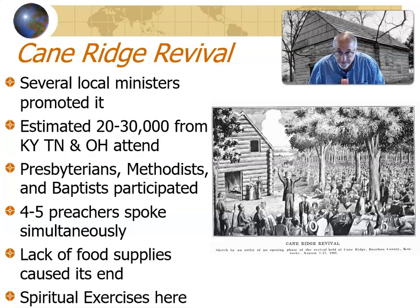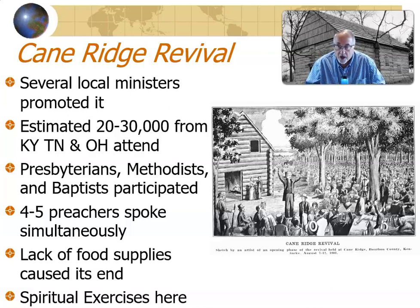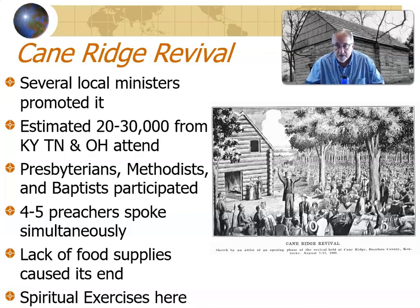There were spiritual exercises at Cane Ridge — people falling over, sometimes called 'slain in the spirit.' People barking — making barking sounds. This is said to be where the phrase 'barking up the wrong tree' comes from. Some people would run and fall over. They would sing uncontrollably. Laughing was one of the things. A lot of different things going on. For a farmer out in the middle of nowhere, suddenly seeing 20,000 to 30,000 people with some running around and falling down — these people did not have what we have today.